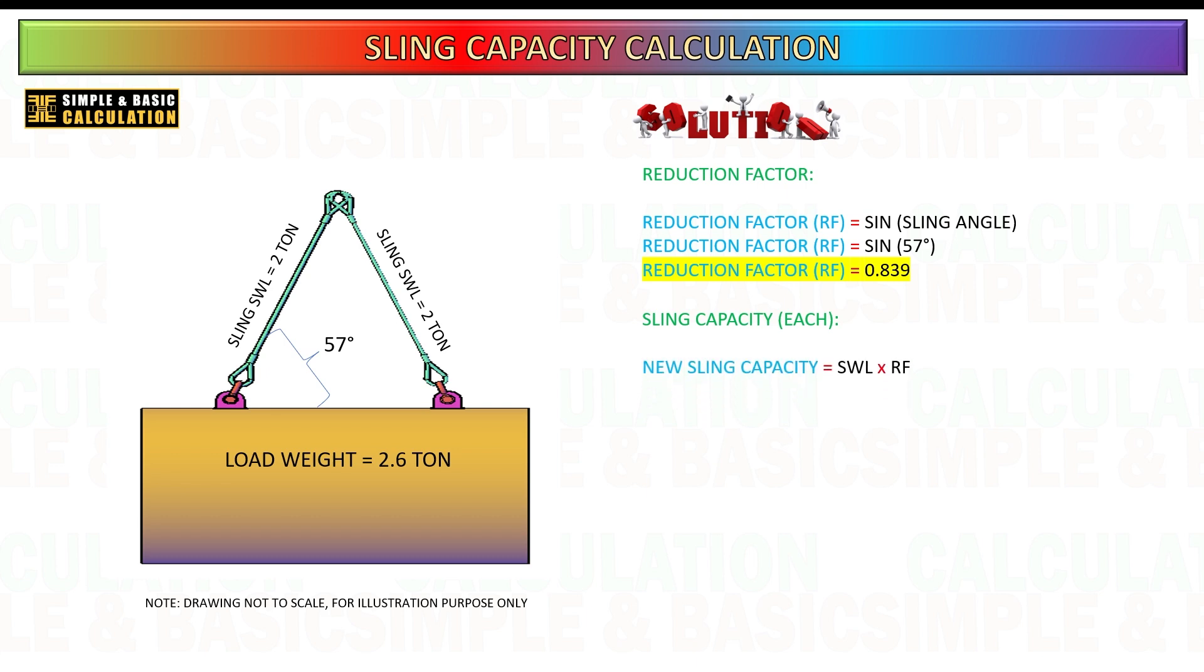Adjust the sling's safe working load, SWL. Multiply the reduction factor by the rated SWL of the sling to obtain the new effective SWL based on the angle. This result indicates that at a 57 degree angle, the effective SWL of each sling is 1.678 tons, which is less than the original 2 tons due to the angle's impact.